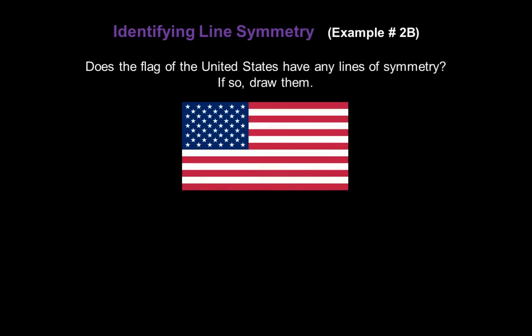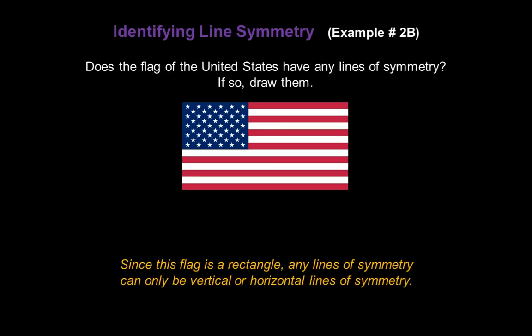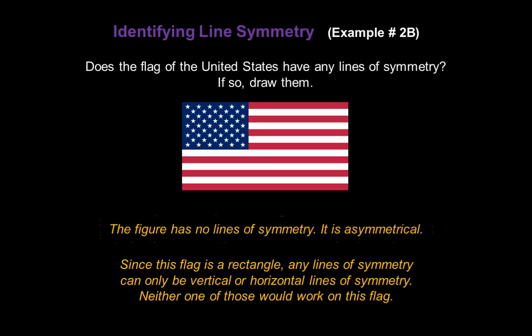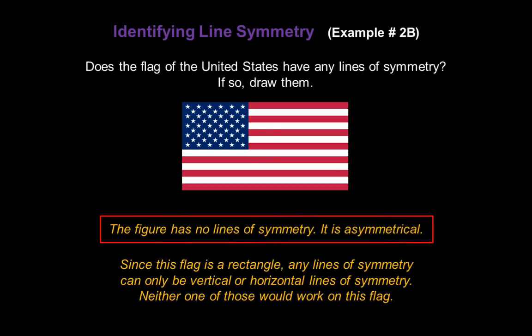Does the flag of the United States have any lines of symmetry? And if so, let's draw those. Since this flag is a rectangle, any lines of symmetry can only be vertical or horizontal lines of symmetry. Neither one of those would work on this flag. So this figure has no lines of symmetry — it is asymmetrical.